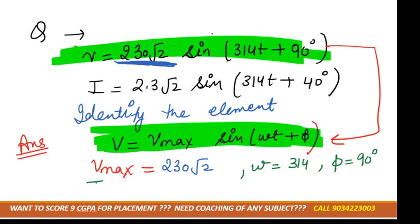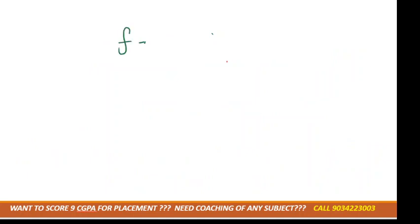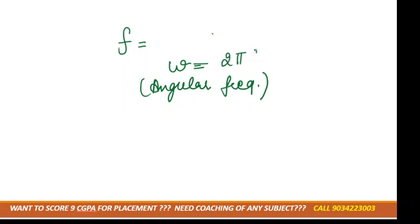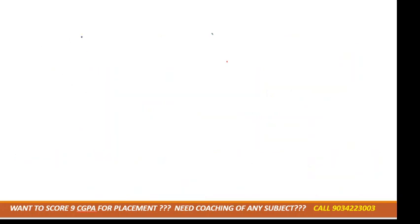Phi for voltage is 90 degrees and phi for current is 40 degrees. If they ask for frequency, we use the formula omega equals 2·pi·f. Since omega is 3140, frequency comes out to 50 hertz.